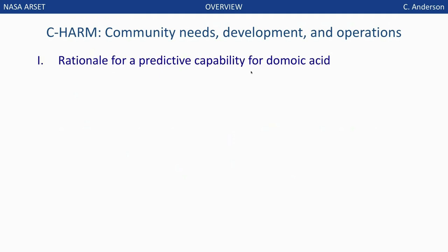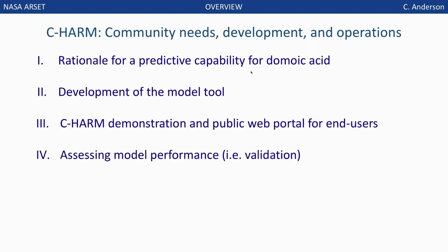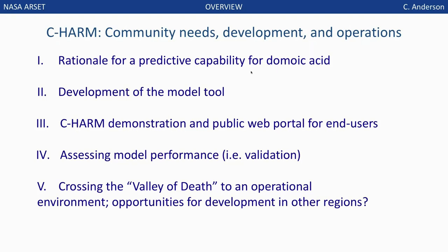I'll give you an overview of what we'll cover. First, it's important to understand the needs of the user community that motivated model development. I'll walk you through an abridged version of how we developed the model over many years, followed by our demonstration platform to distribute this model routinely and ensure the C-HARM system meets community needs. I'll also end with a brief dissection of how a model becomes a federally operational tool — a process often referred to as crossing the valley of death because of the many pitfalls associated with turning a research product into a reliable management tool.